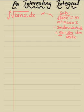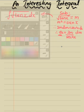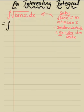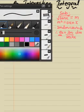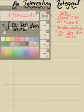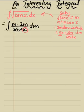So this equals the integral of √(tan x) — which is m — times dx, which is 2m over sec²x dm. There's one little problem: we have x in the denominator, but we need to integrate with respect to m, so we need to find a way to bring m into the denominator.